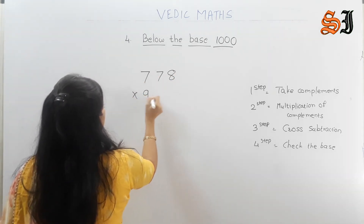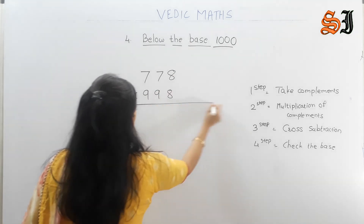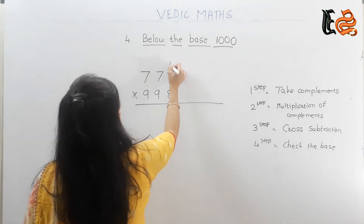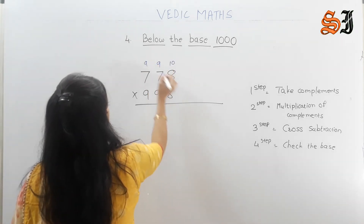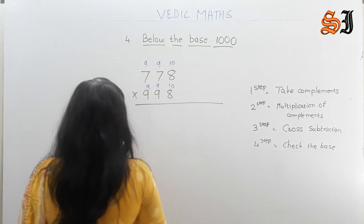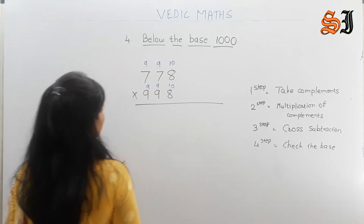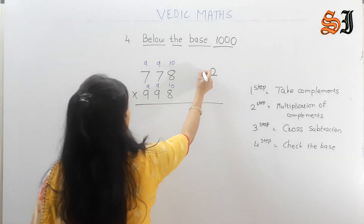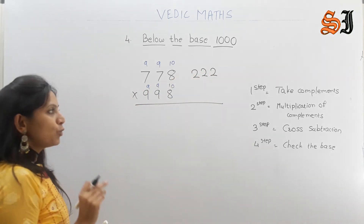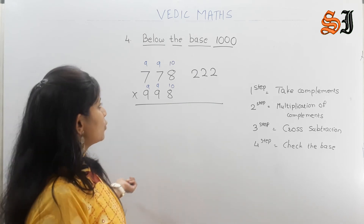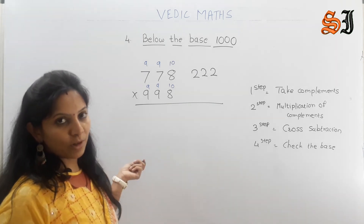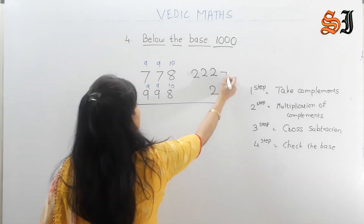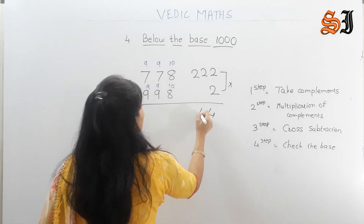Now: 778 into 998. First step: take the complements. Complement of 998: 10, 9, 9. Complement of 778: 10, 9, 9. The complement answer — 9 minus 7 is 2. Note: a 0 is not there, so the answer taken is 2, 2, 2. Remember, when taking complements, be very careful. The complement is 2, 2, 2. Next step: 4, 4, 4.